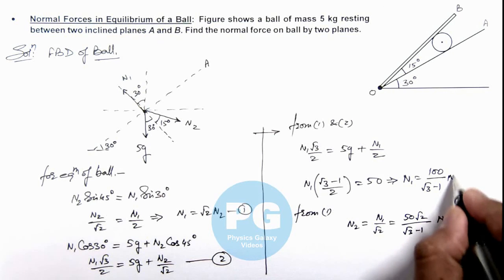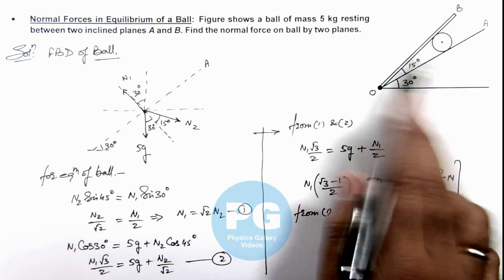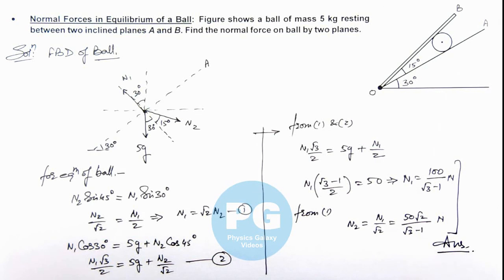So these are the values of normal reactions acting on the ball due to inclined planes A and B. That will be the result of this problem.